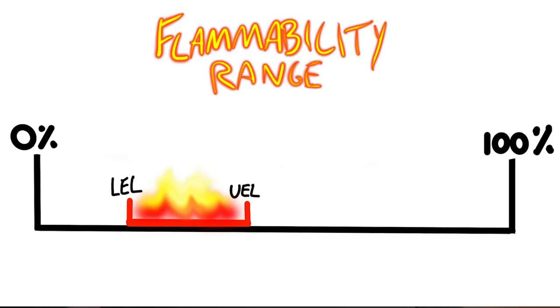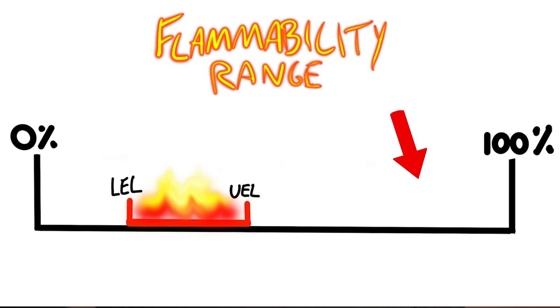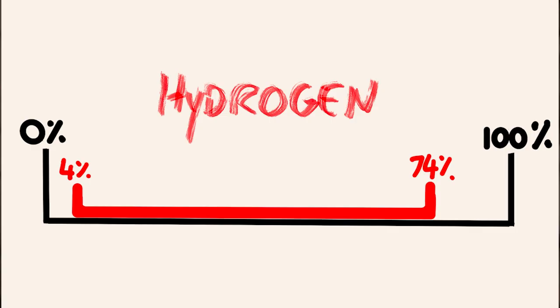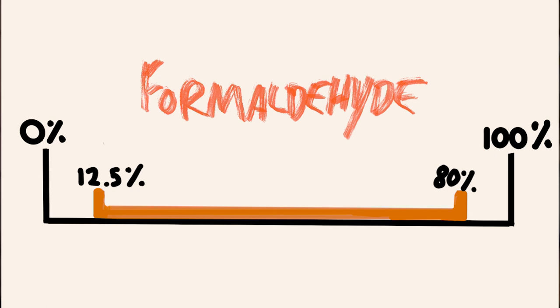Thinking back to the video on flammability ranges, for every flammable gas there is a range for which it is flammable. If there is not enough of the gas, it is below its lower explosive limit and won't be flammable. If there is too much gas and not enough oxygen, it is above its flammability range and also not flammable. It is only within those certain parameters where the gas will be flammable. In smoke we have substances such as hydrogen, which is very flammable, carbon monoxide, which is very flammable, and formaldehyde, which is also very flammable.